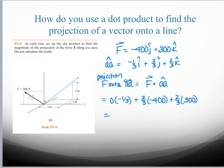And so the projection of F onto that line AA is F dotted with that unit vector, which is going to be 0 times minus 1/3 plus 2/3 times minus 400. So notice because when I'm doing that dot product I'm not getting any direction.